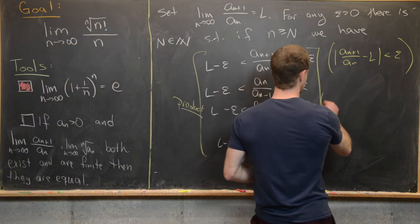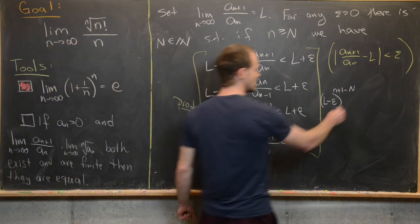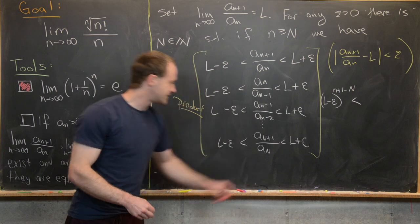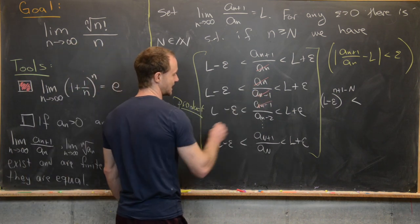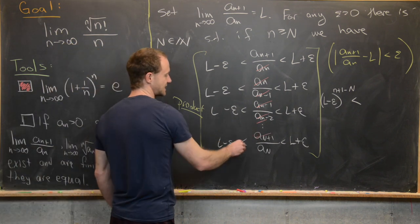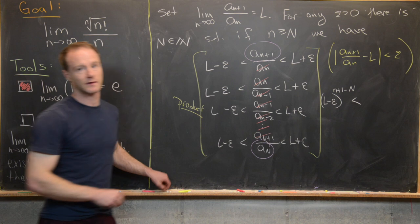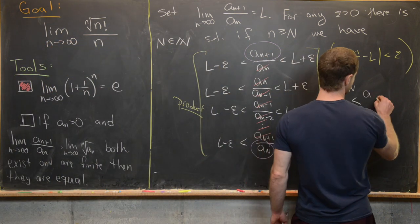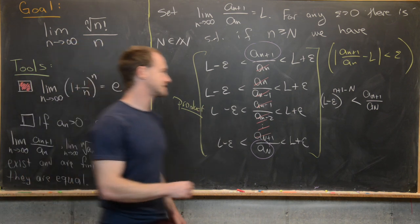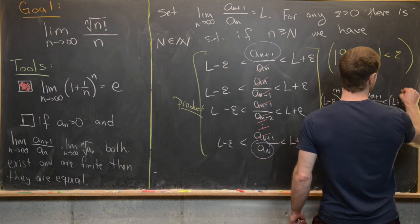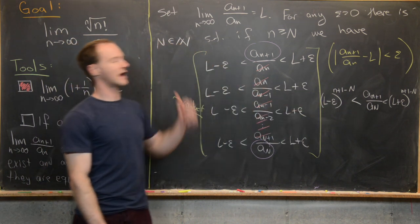Now we take the product of all these inequalities. Since all parts are positive we maintain the direction of the inequalities. In the middle, nearly everything telescopes and cancels — a_n cancels, a_{n-1} cancels, and so on — leaving a_{n+1} over a_N. So we get: l minus epsilon to the power (n+1 minus N) is less than a_{n+1} over a_N, which is less than l plus epsilon to the power (n+1 minus N).